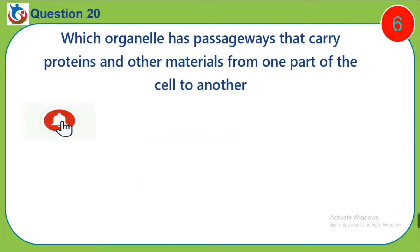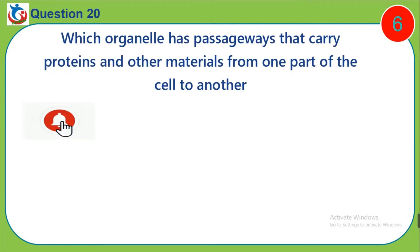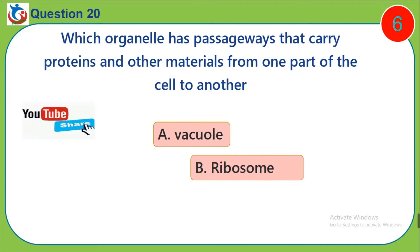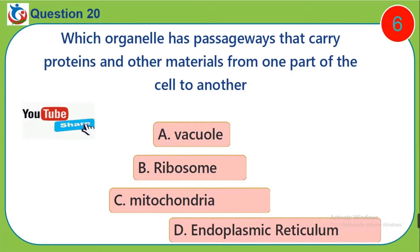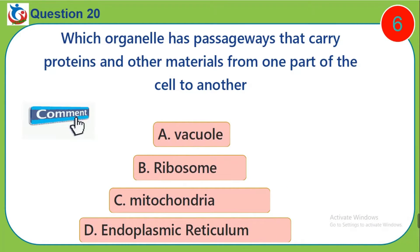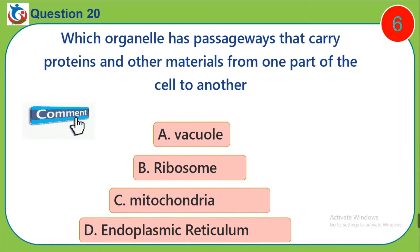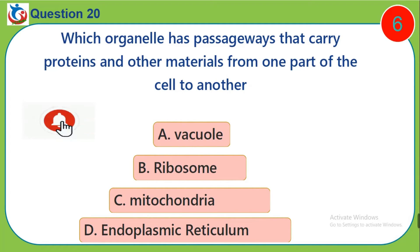Question 20. Which organelle has passageways that carry proteins and other materials from one part of the cell to another? A. Vacuole. B. Ribosome. C. Mitochondria. D. Endoplasmic reticulum.